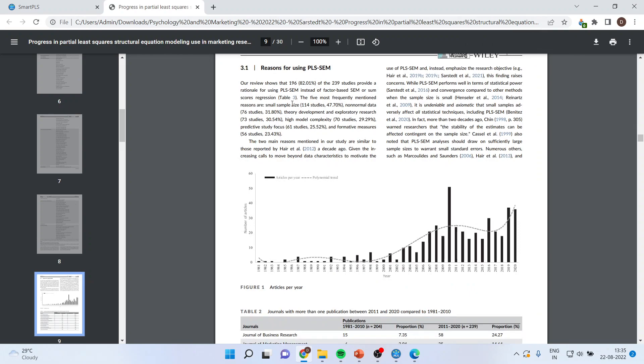The top five reasons found in their studies are: it can work on small sample size, one. Second, it can work on non-normal data. For 114 studies confirmed to this, 76 studies talk about working on non-normal data. Third, theory development and exploratory research is possible, 73 studies are on it. It can work on high model complexity very easily, 70 studies are there. And it can handle formative measures very easily.